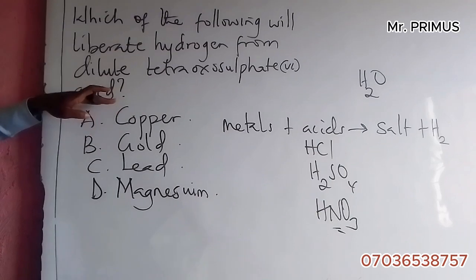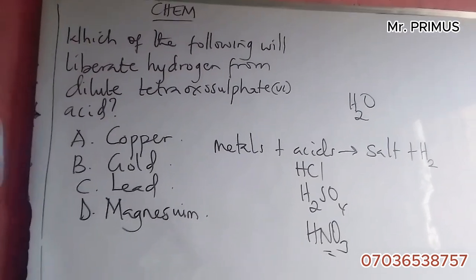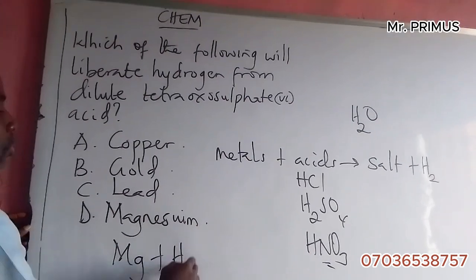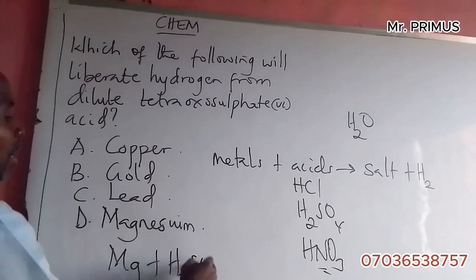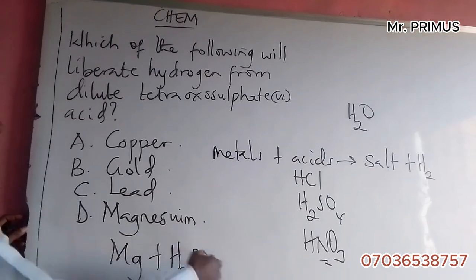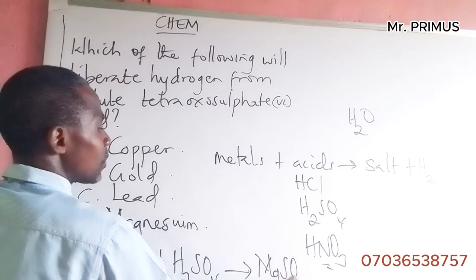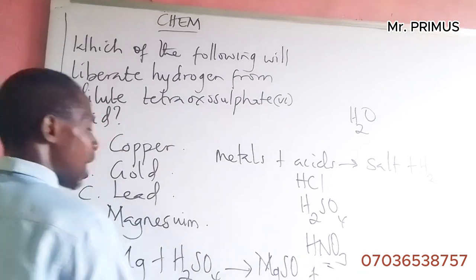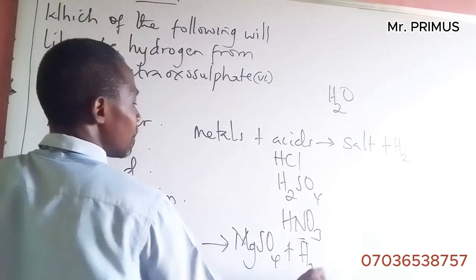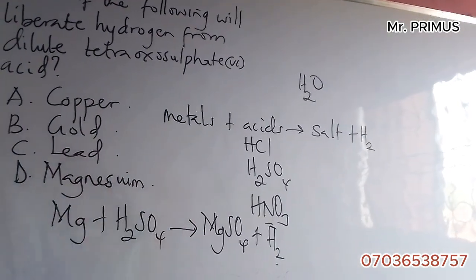So if magnesium reacts with an acid — if you have magnesium ribbon and dilute H₂SO₄ — it will give you the corresponding salt, magnesium sulfate, plus hydrogen gas.